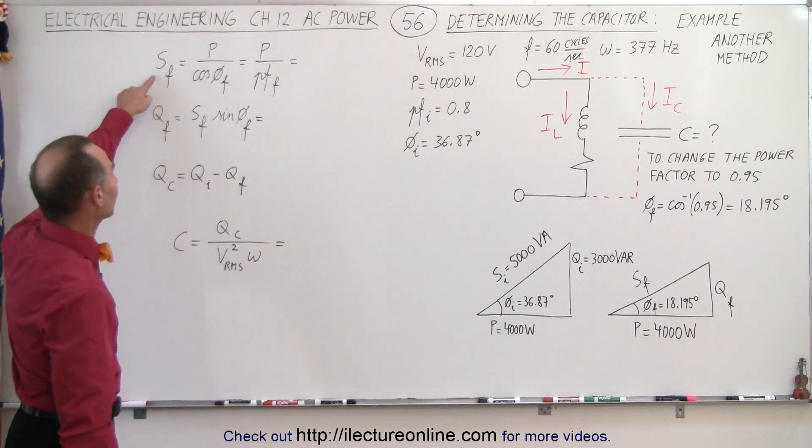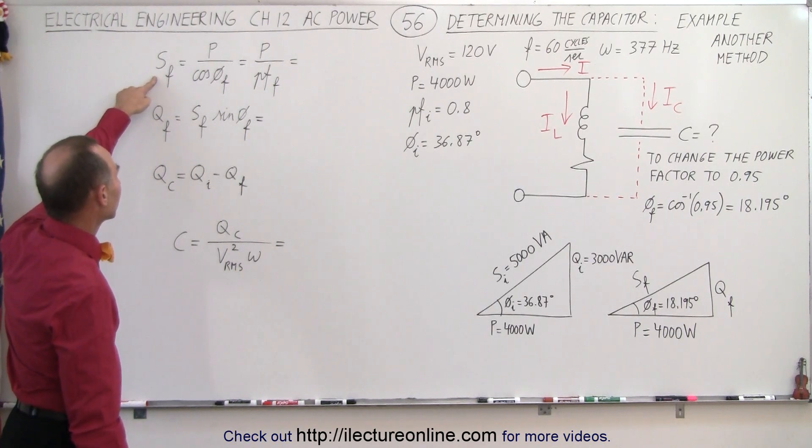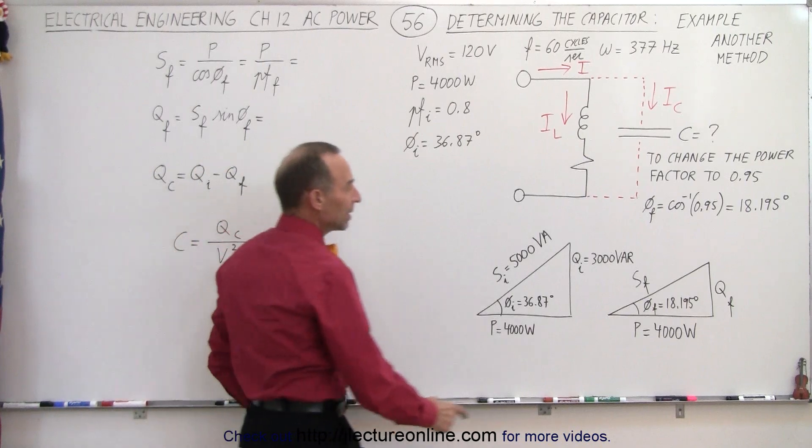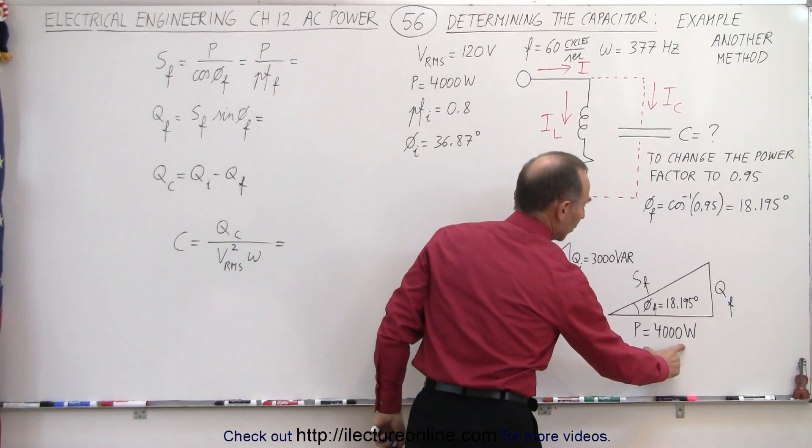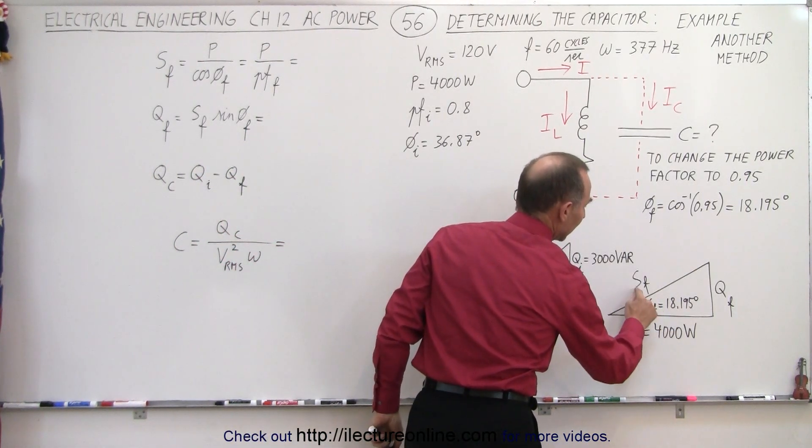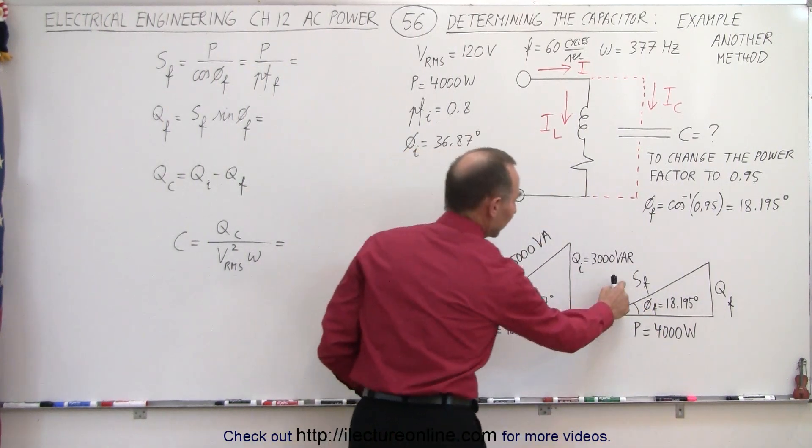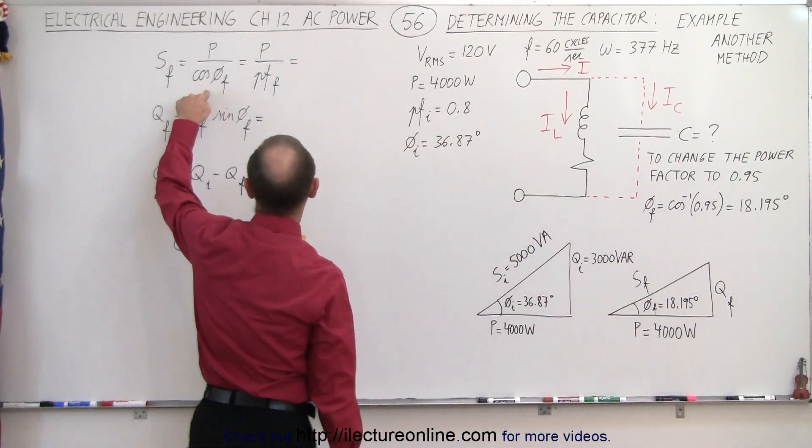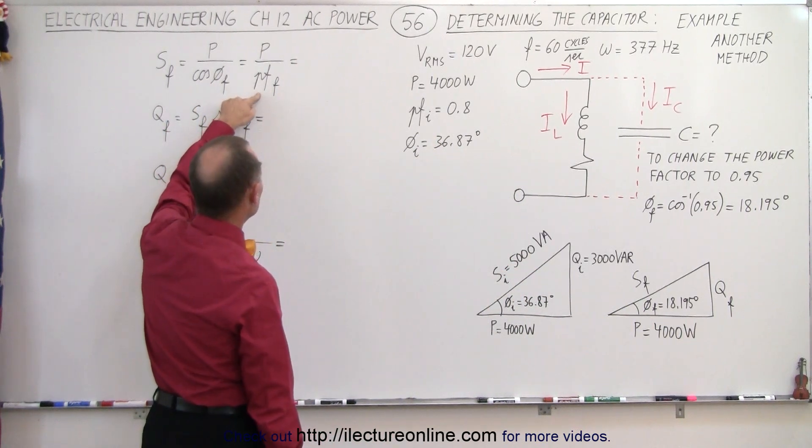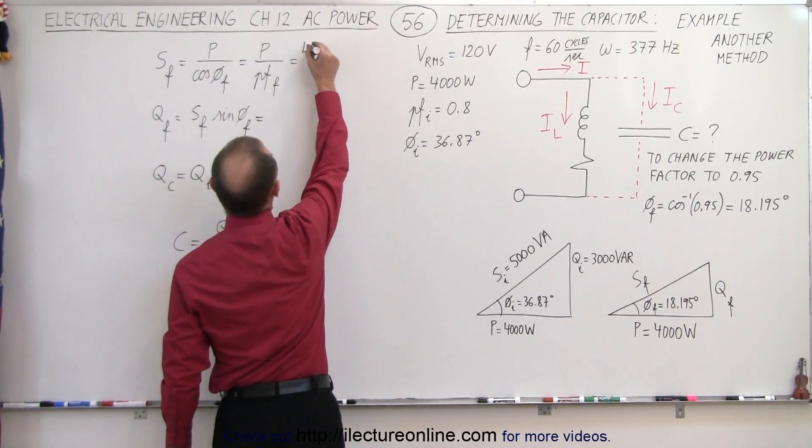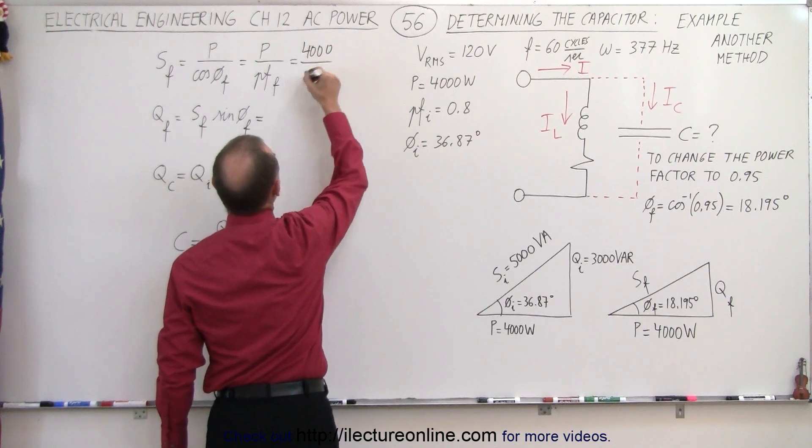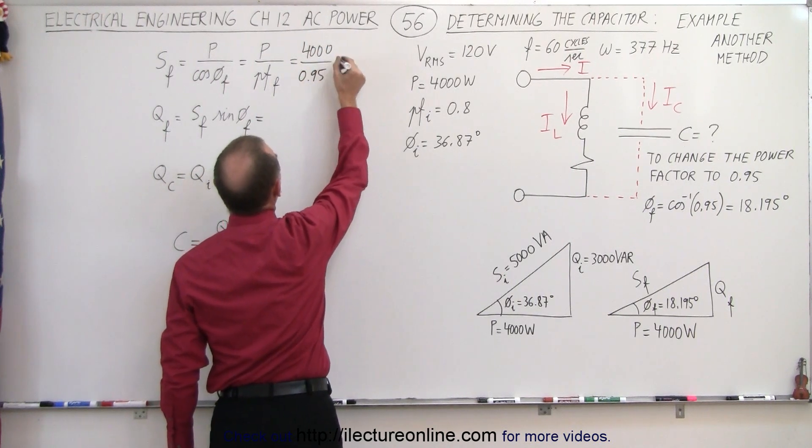So what we're going to do first is find the final complex power, which means we take the power here, which can be calculated by taking SF times the cosine of the final angle. So therefore, SF would be the power divided by the cosine of the final angle, which is divided by the new power factor. So that means we take 4000 divided by the new power factor of 0.95.